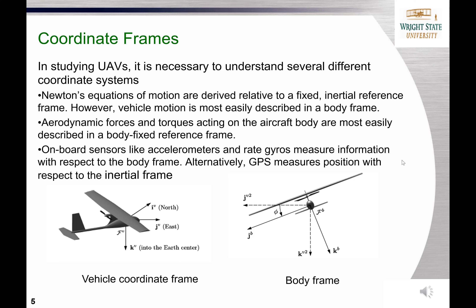First, coordinate frames. Newton's equations of motion are derived relative to the fixed inertial Earth frame. However, vehicle motion is most easily described in the body frame. Additionally, aerodynamic forces and torques acting on the vehicle are most easily described in a body-fixed frame. Also, onboard sensors like accelerometers and gyros measure information with respect to the body frame, while GPS measures position with respect to the inertial frame. Therefore, it is necessary to understand several different coordinate systems and how to conduct transformations between these coordinate frames.